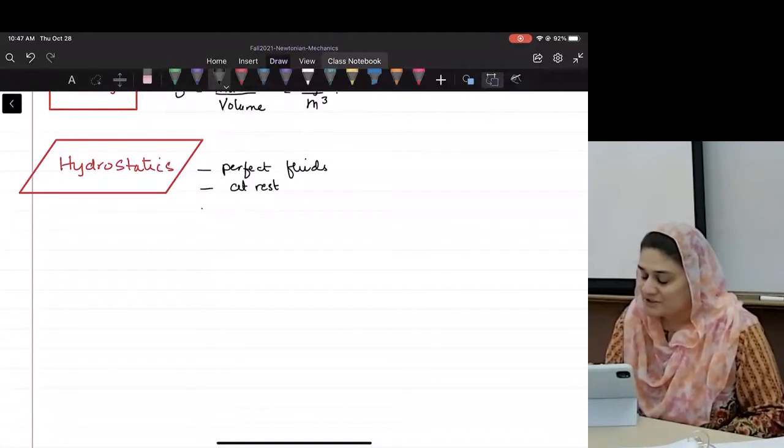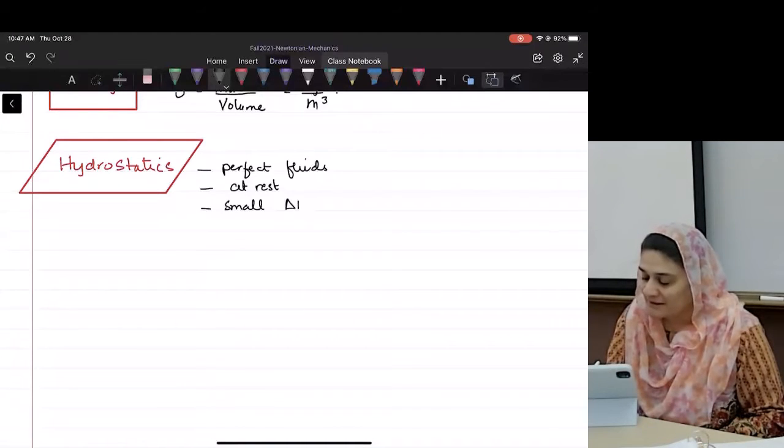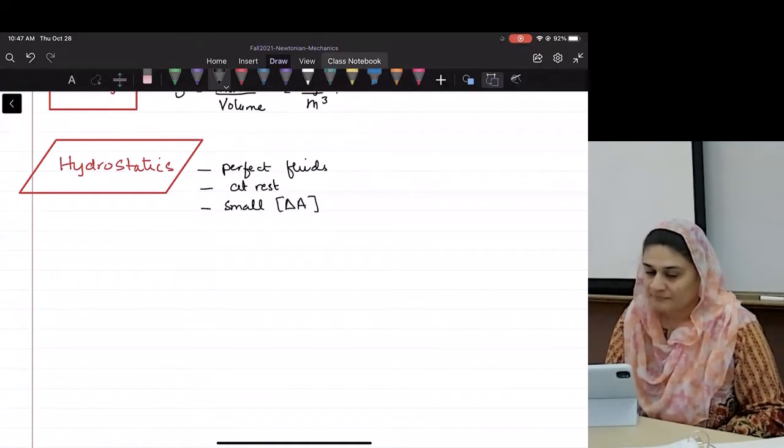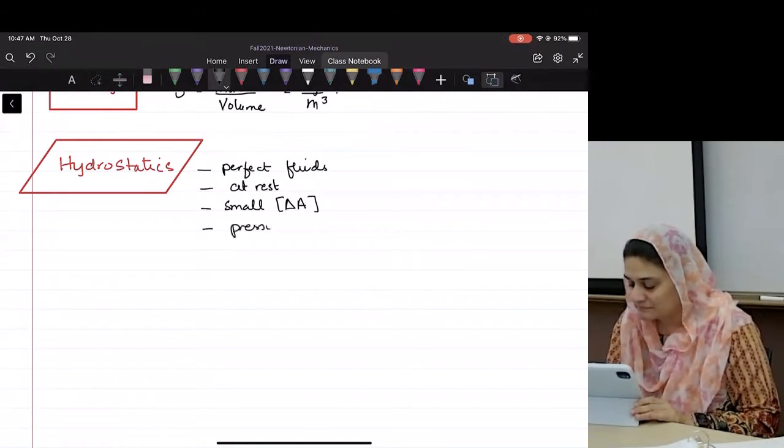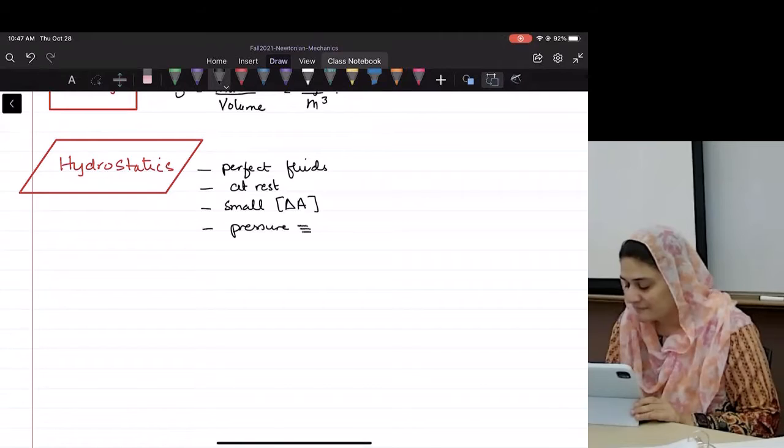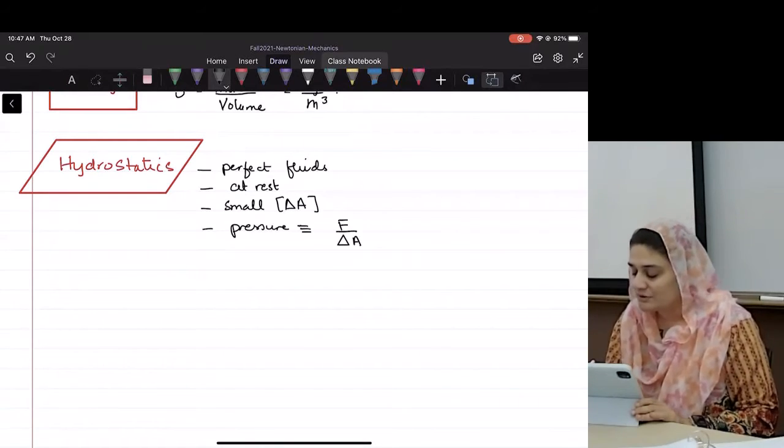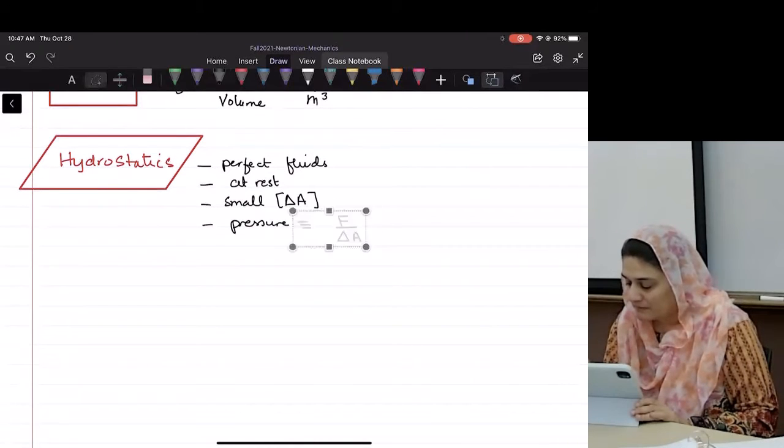If I take a small delta area, can I define the pressure as F over delta A? Can I also call - let me define this as big P.